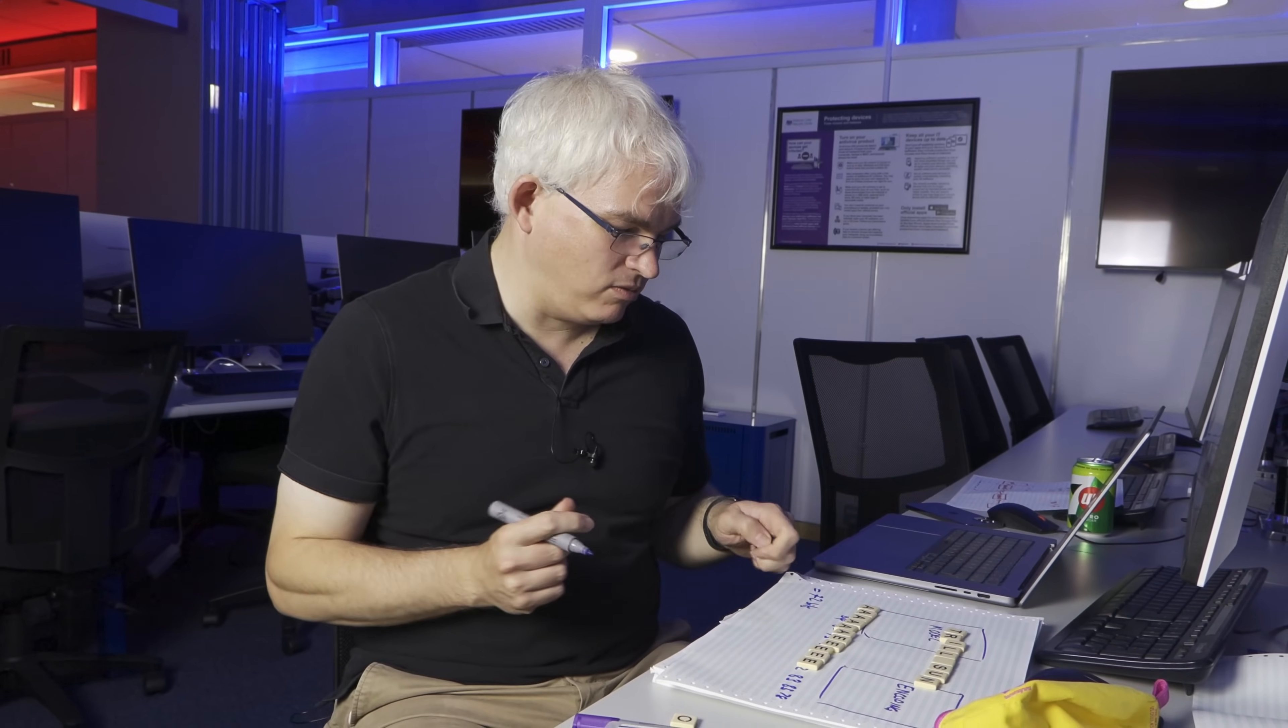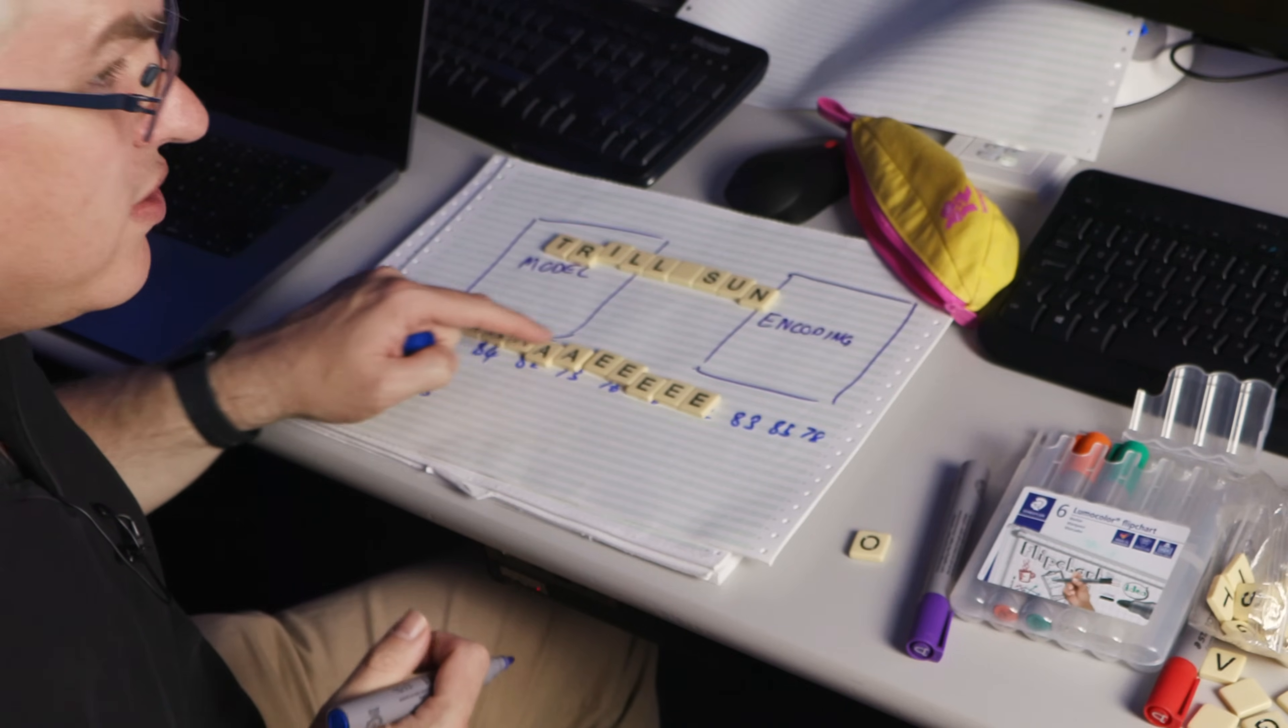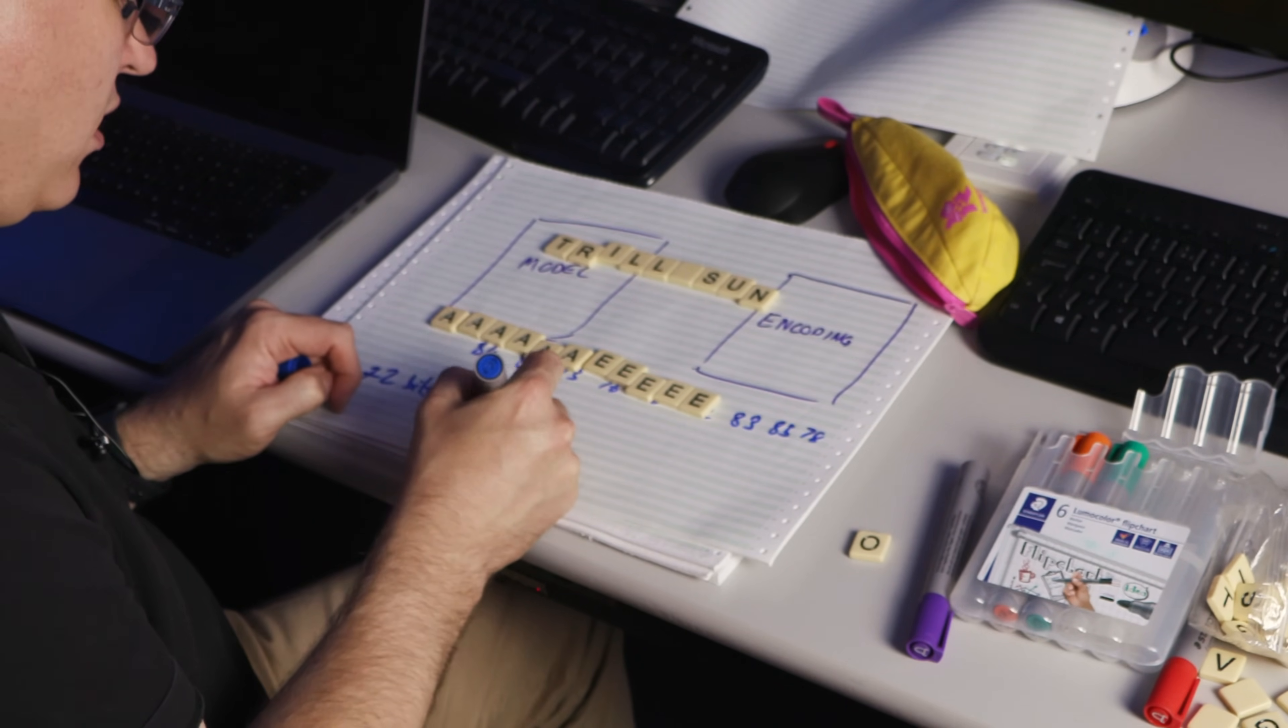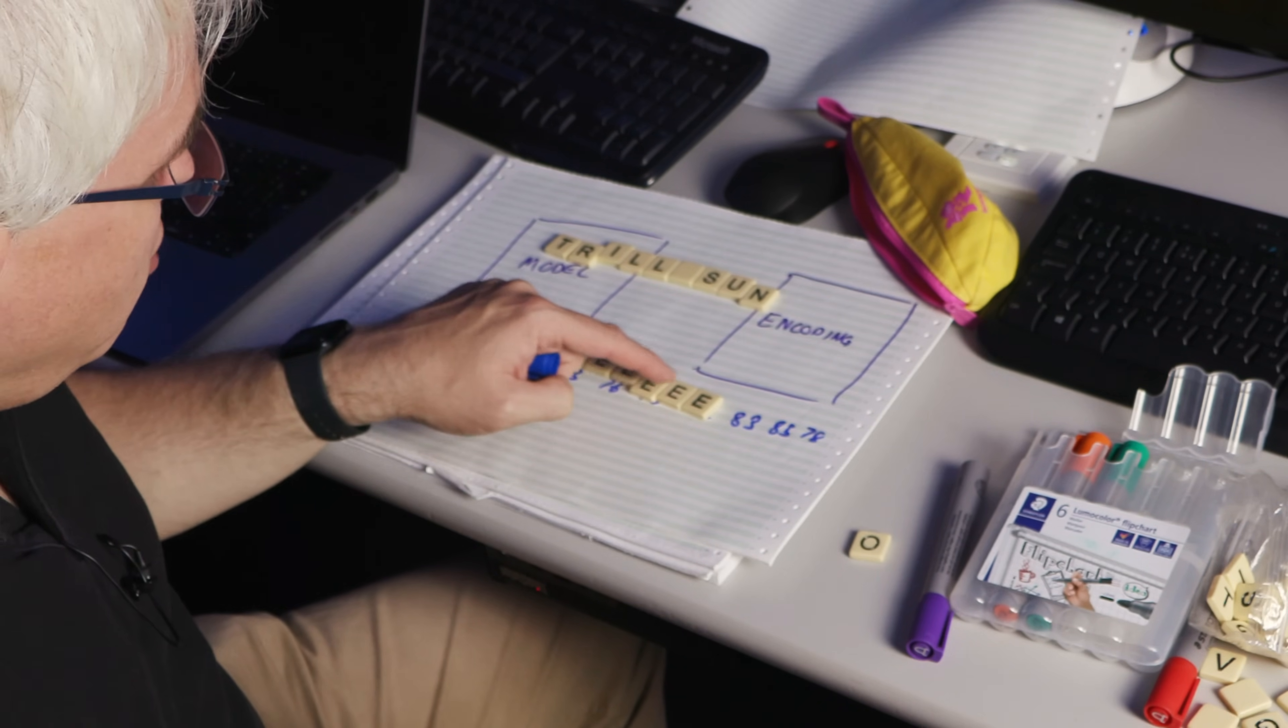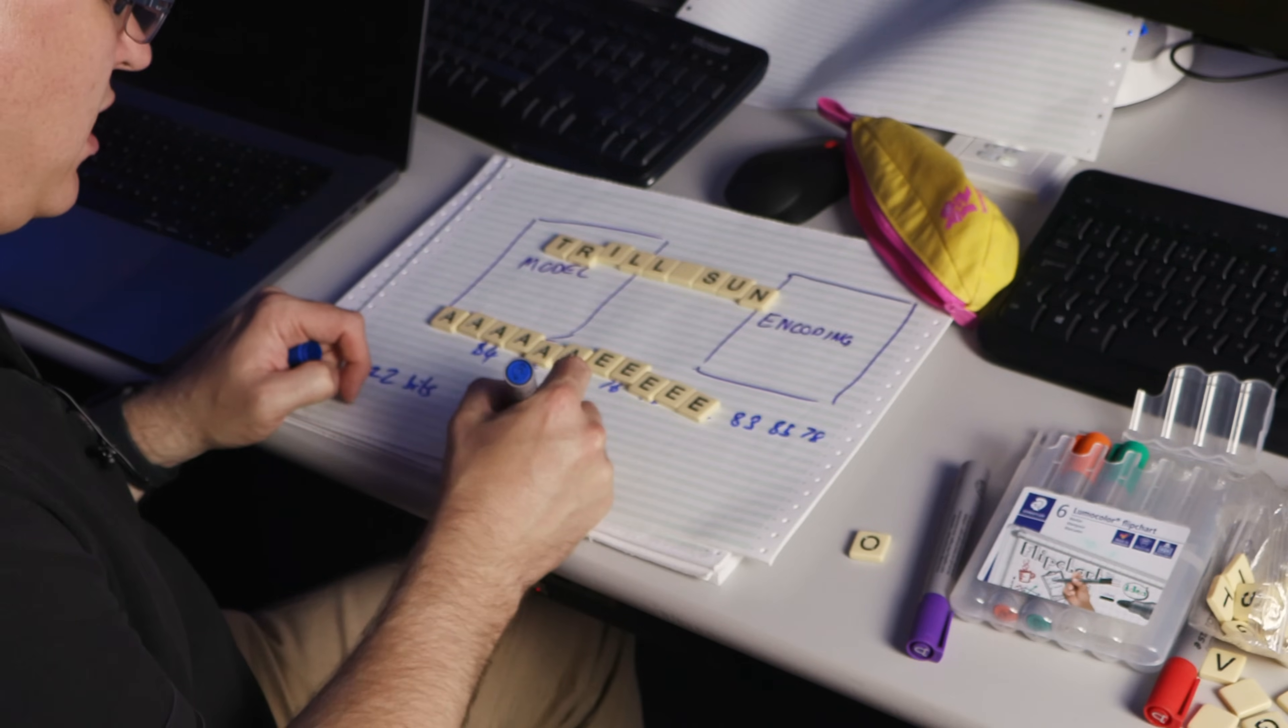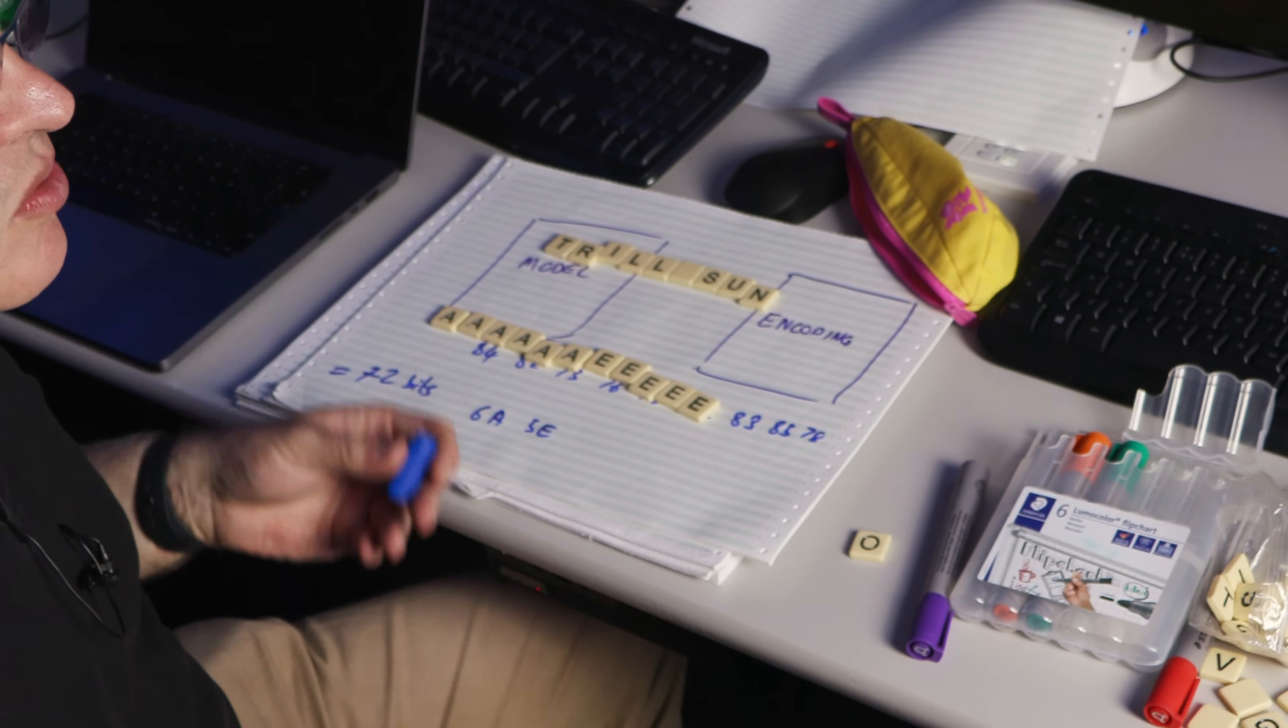then one of the easiest ways we can compress this is actually to say, well, actually, we've got one, two, three, four, five, six A's, followed by one, two, three, four, five E. Rather than taking up 11 characters, we now only take up four, or four bytes. You probably want to represent it slightly different, but if we change the model to actually say last time, we're going to describe it not as A, A, A, A, A, but we're going to describe the number of letters we've got.